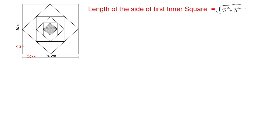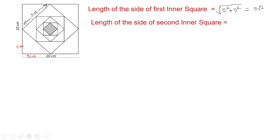That will be equal to 5√2. So the length of the side of the second inner square will be √((5/√2)² + (5/√2)²), which equals 5. So the length of the second inner square's side is 5 centimeters.